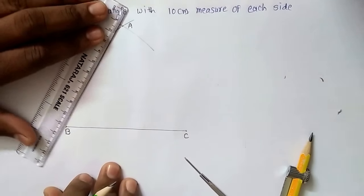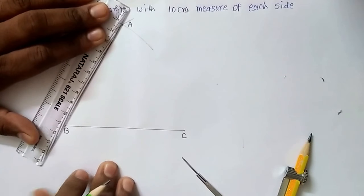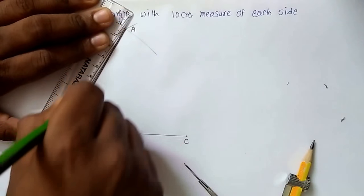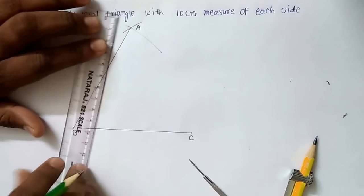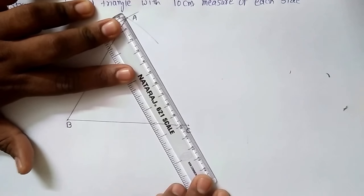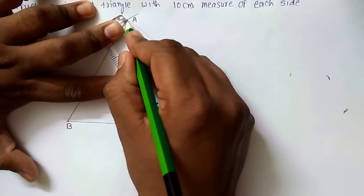And now I will join line segment AB. I will draw the line segment which will join these two points A and B. Similar way, I will join point A and C. So this will be the line segment AC.